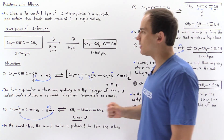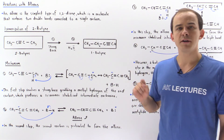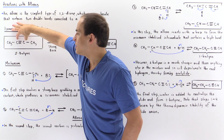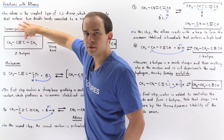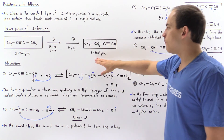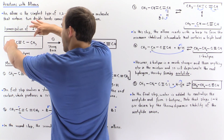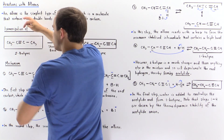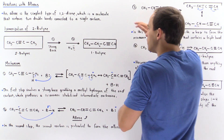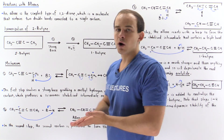Specifically, we're going to focus on the isomerization of 2-butyne using a strong base into 1-butyne. We take 2-butyne, which is an alkyne that contains a triple bond between the two carbons in the middle. We add a strong base in the first step, then water, and we form the product 1-butyne. In this process, we move the triple bond from between the second and third carbon to the third and fourth carbon — to the end of the molecule.